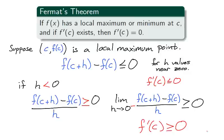We now have two inequalities. The derivative of f at c is at most zero, and the derivative of f at c is at least zero. Therefore, we have that the derivative of f at c is exactly zero.